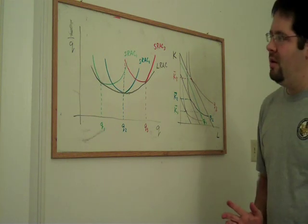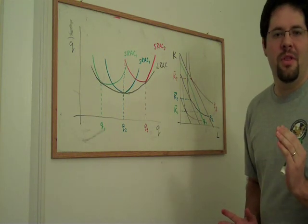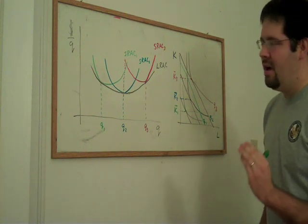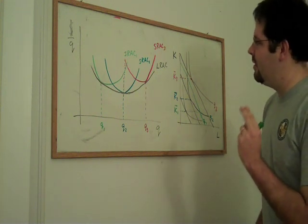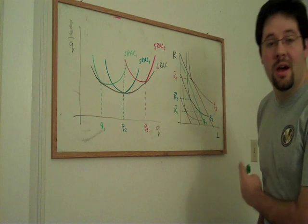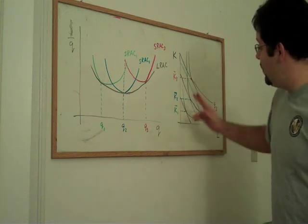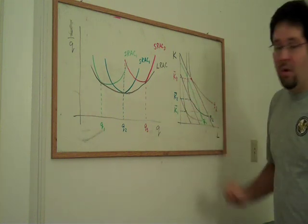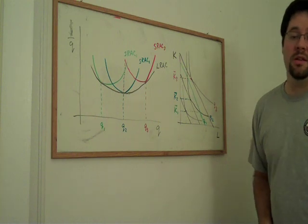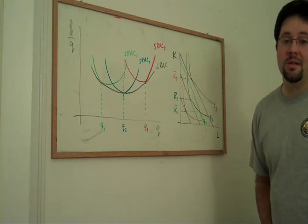And that sweet spot is the spot at which there's a tangency between an isoquant and an isocost.